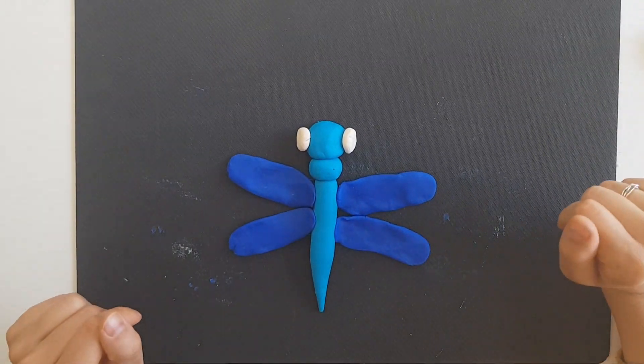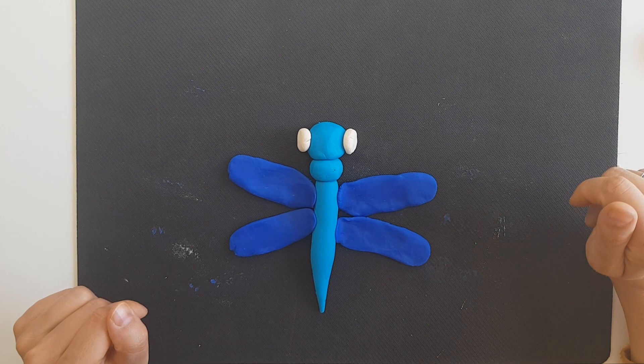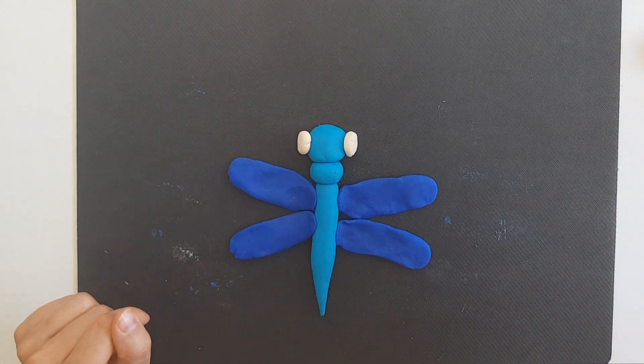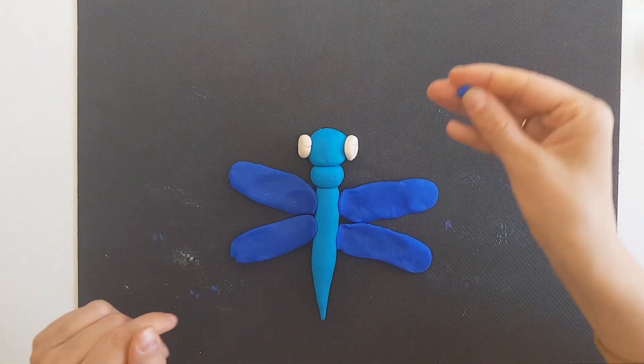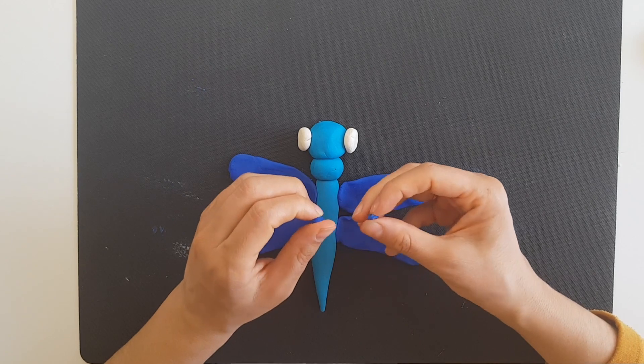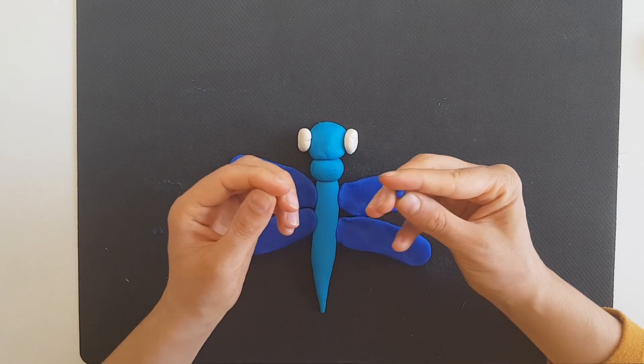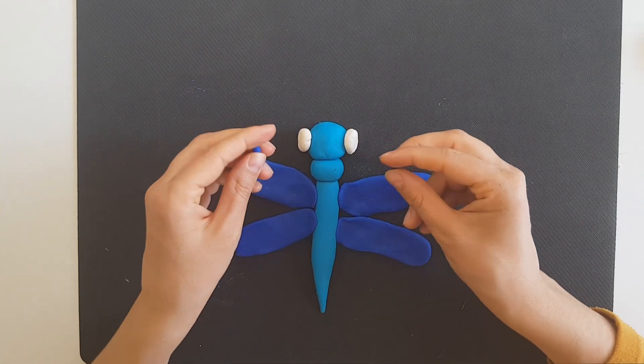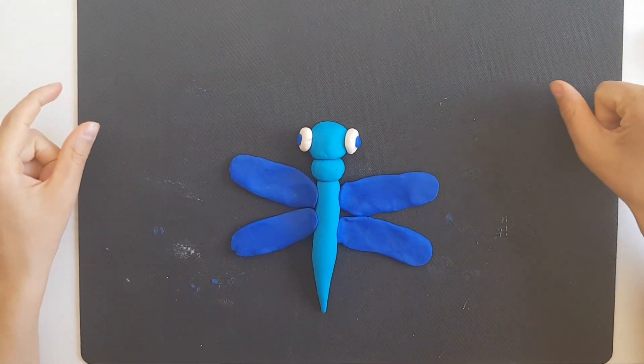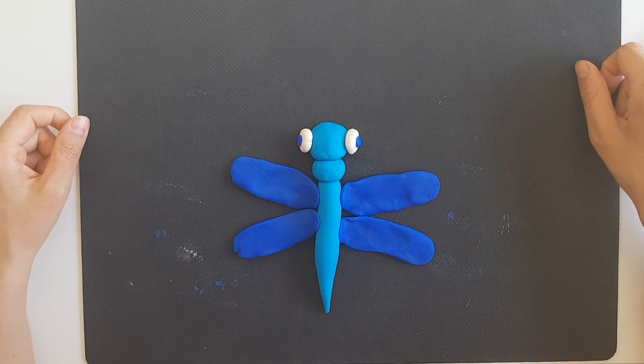Okay, and now you can use any color that you want. I will use just a bit of dark blue and I will put very small pieces here for the eyes. And the dragonfly is ready.